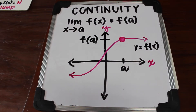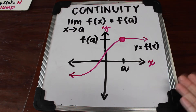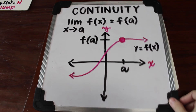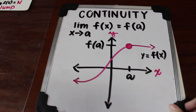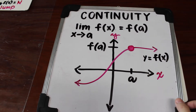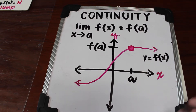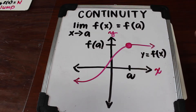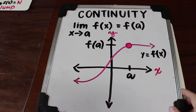So in order for us to fully understand what continuity is, I will have to show you a graph. This is continuous because the two-sided limit approaches the same value of the function. In short, a function is continuous at a point if you can draw the graph of that function without having to lift your pen or pencil.